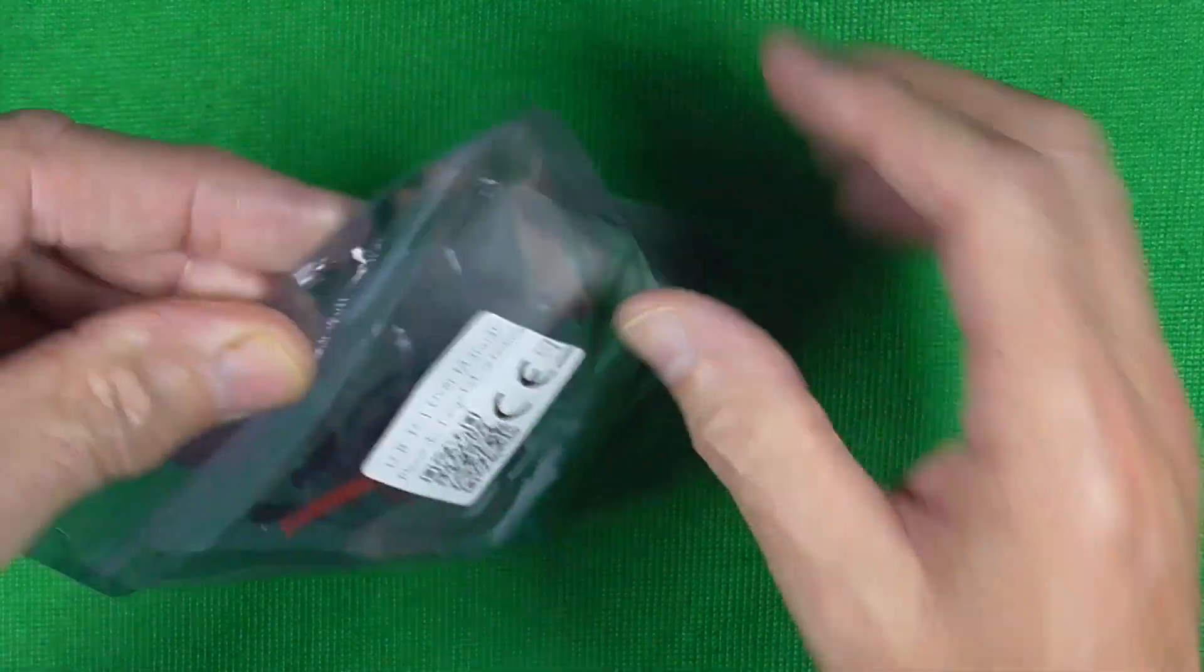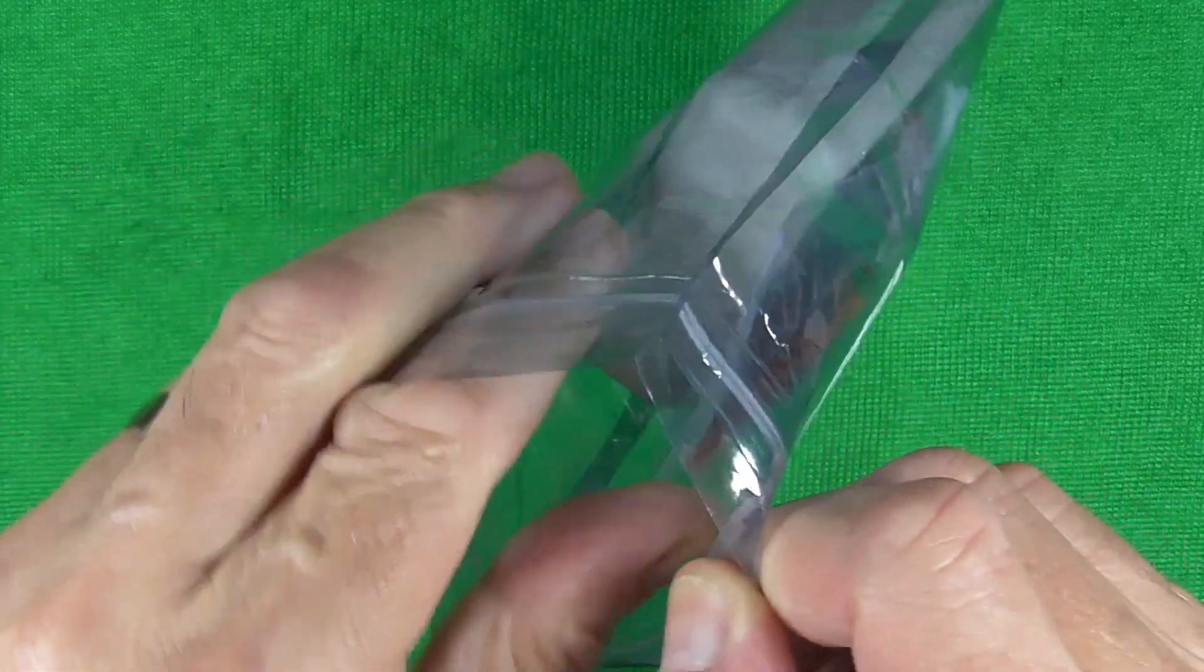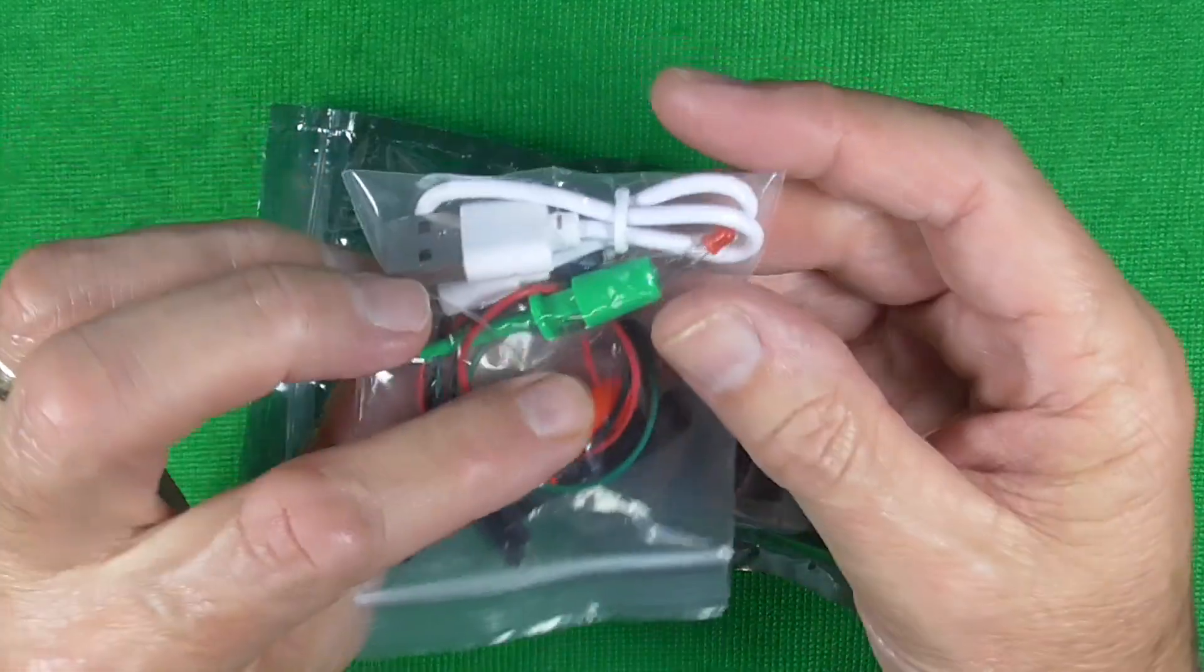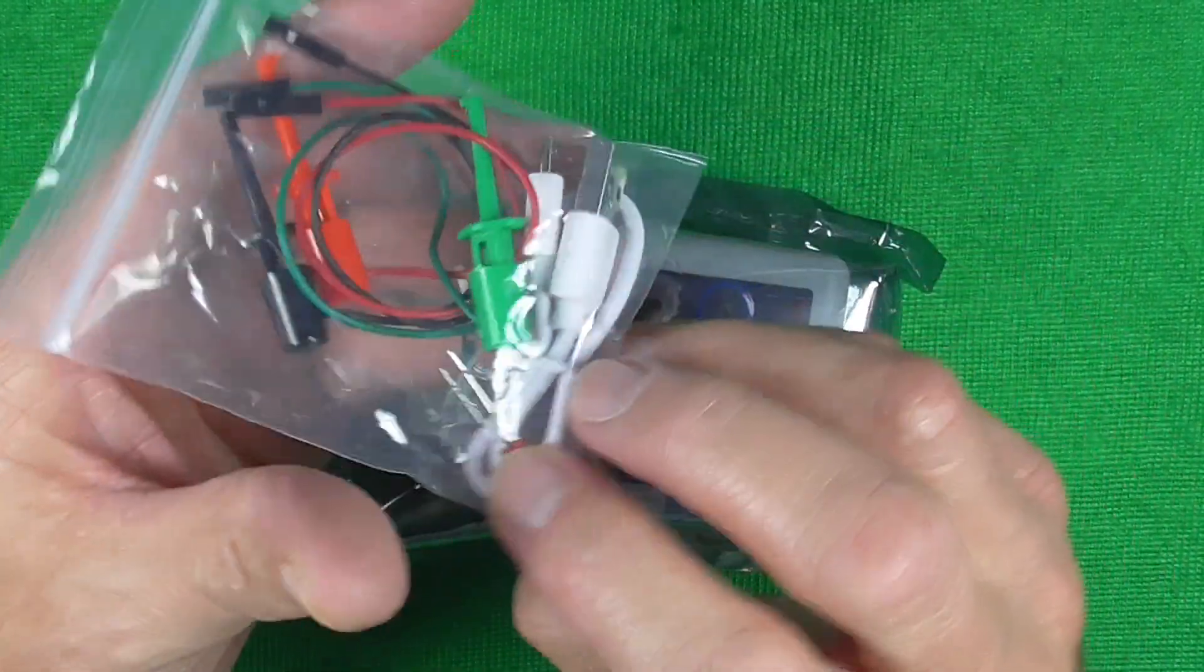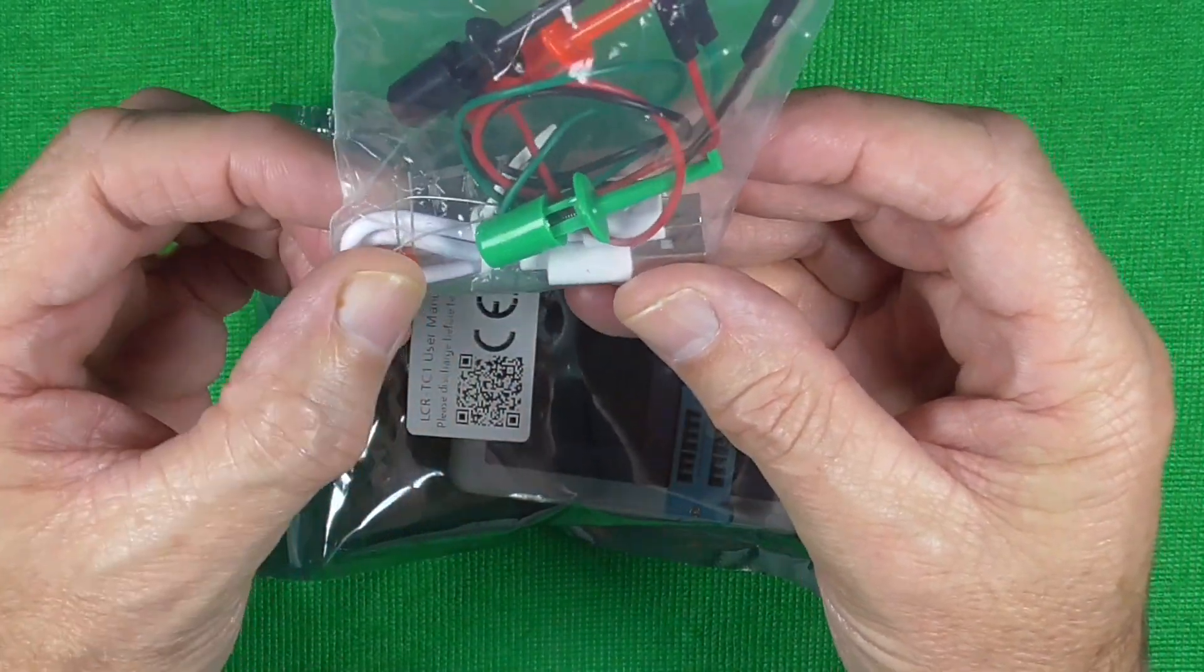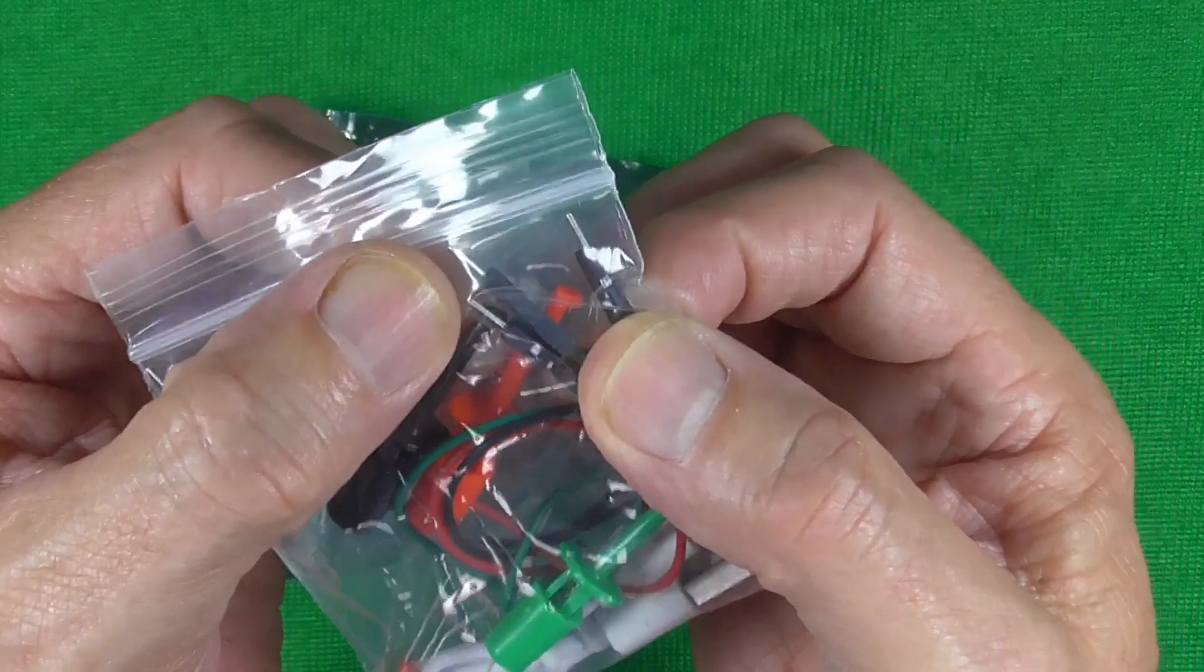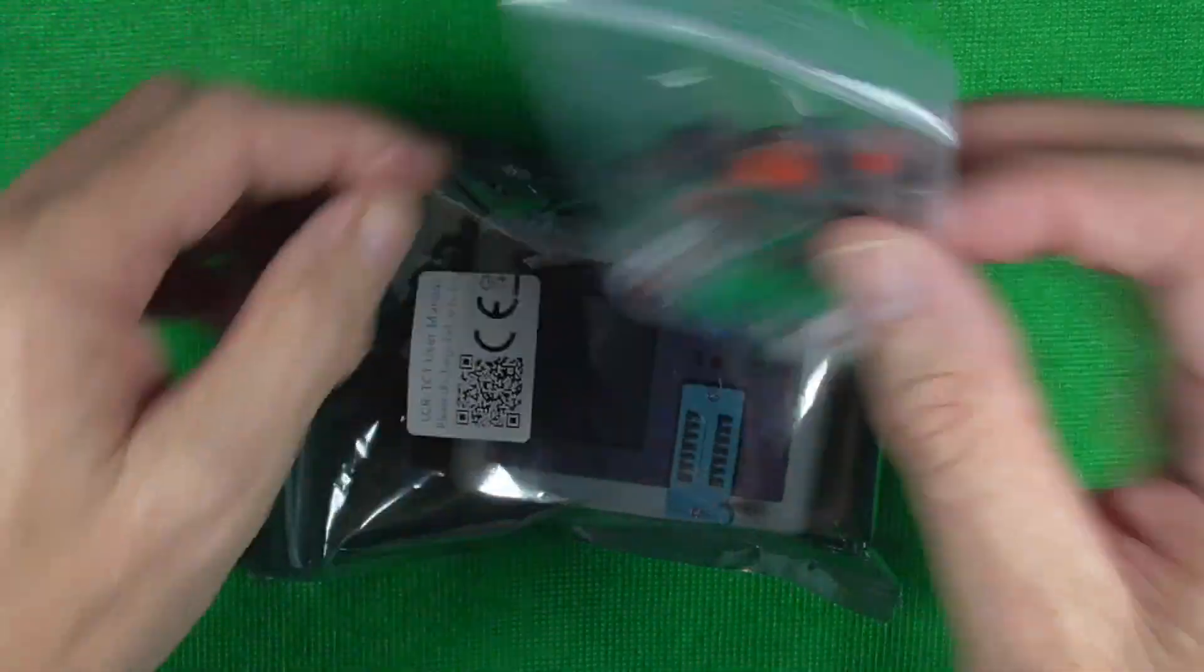So let's get him out. We've got a little bag there with some probes, a charging cable, and a couple of components by the look of it for testing. Just for example, and three pins which I assume are to replace the ones on the end of the cables should they become broken. So we'll have a look at that in a second.